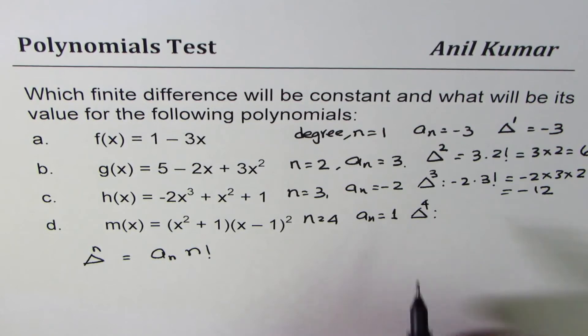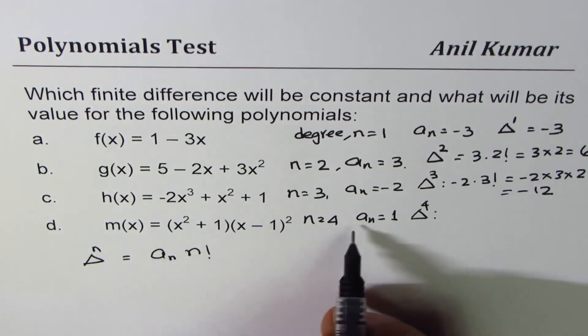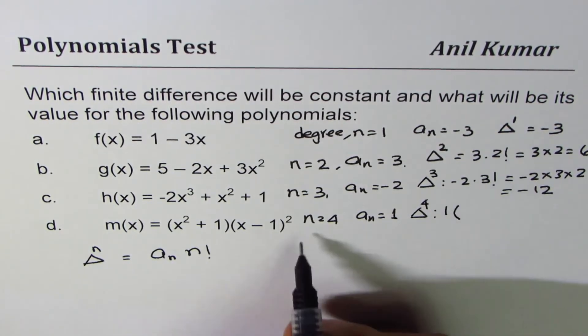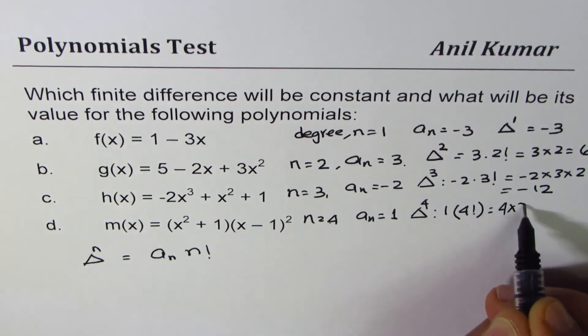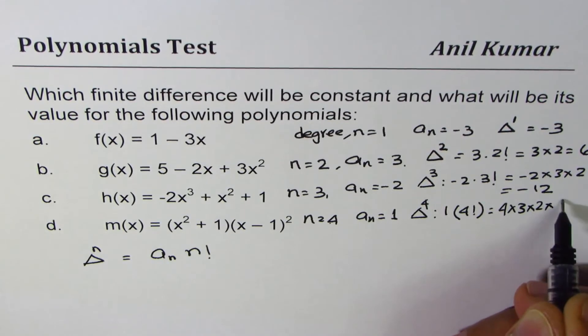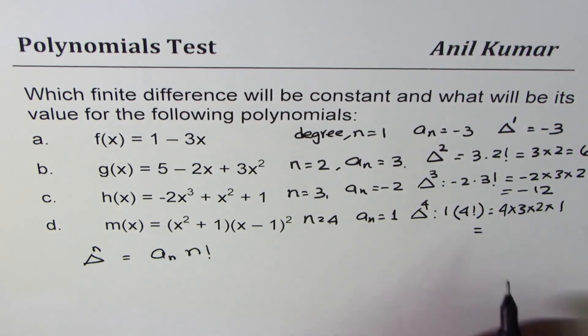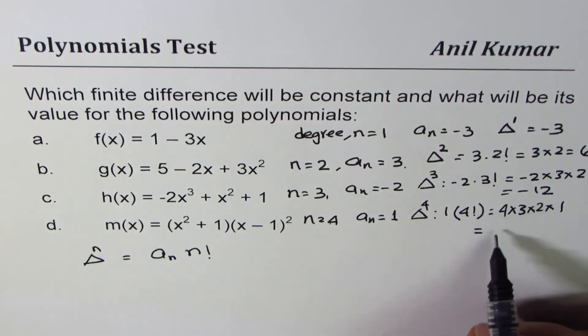Fourth finite difference is constant, whose value will be a_n is 1 times 4 factorial, which is 4 times 3 times 2 times 1, and that is equal to 12 times 2 as 24.